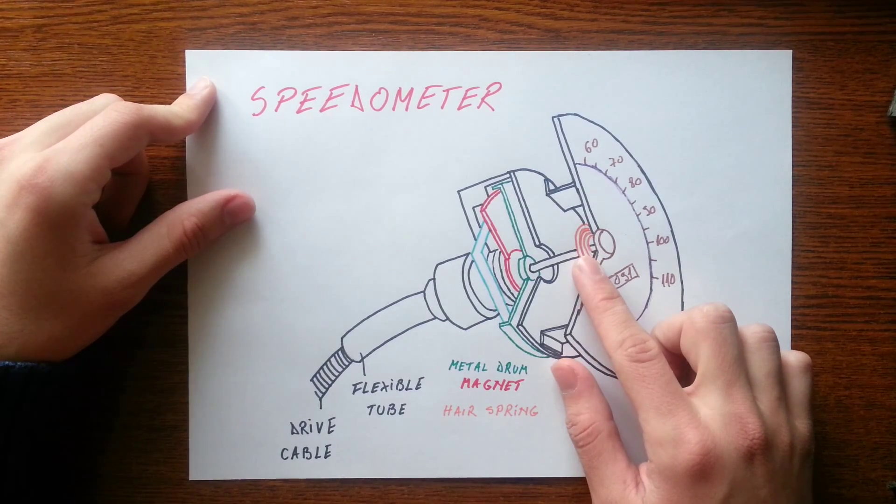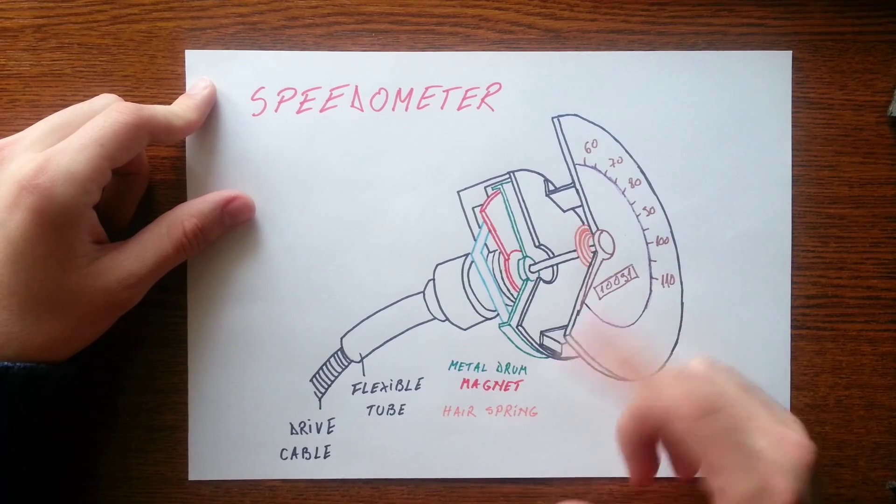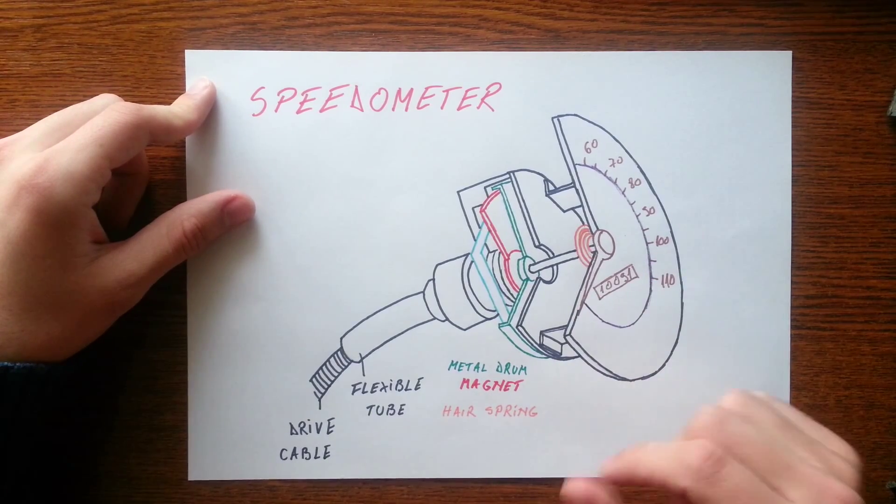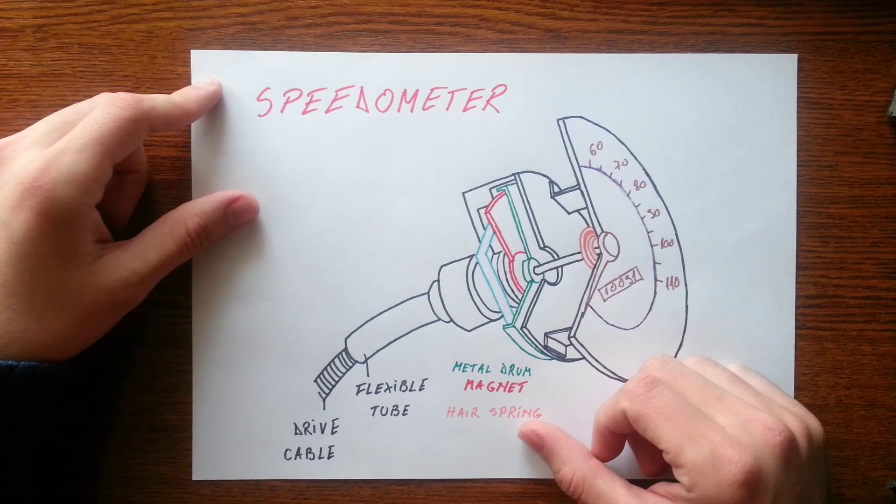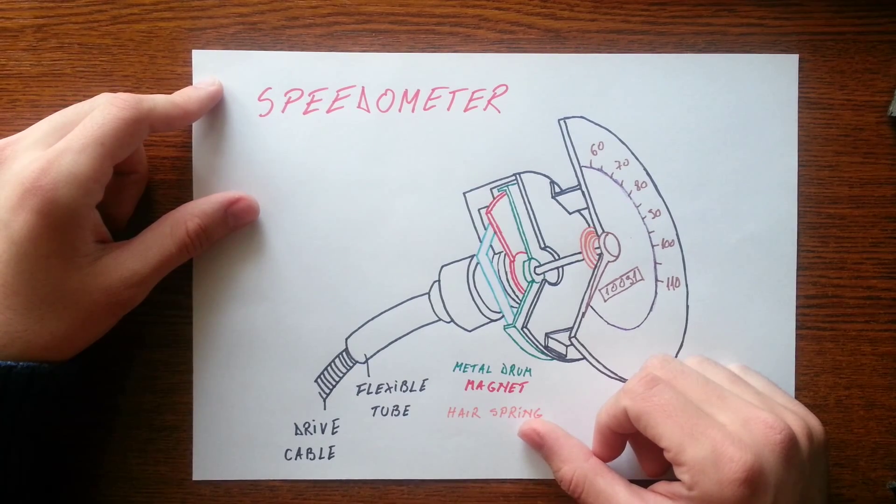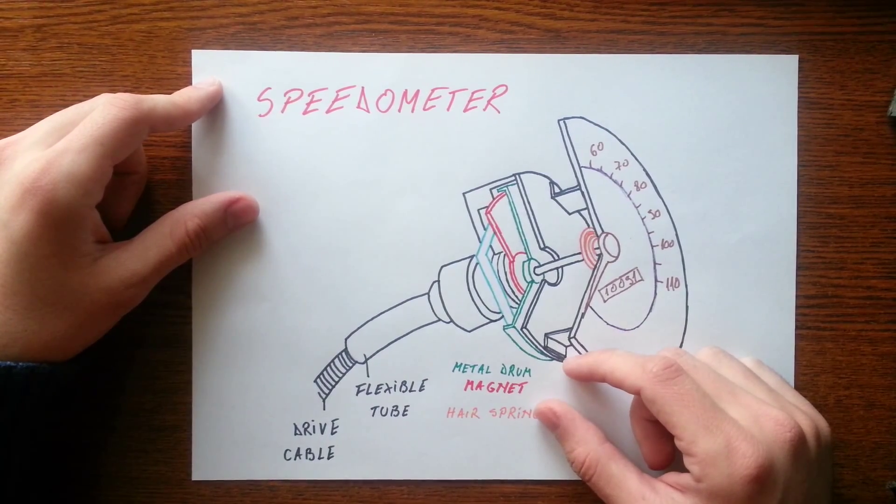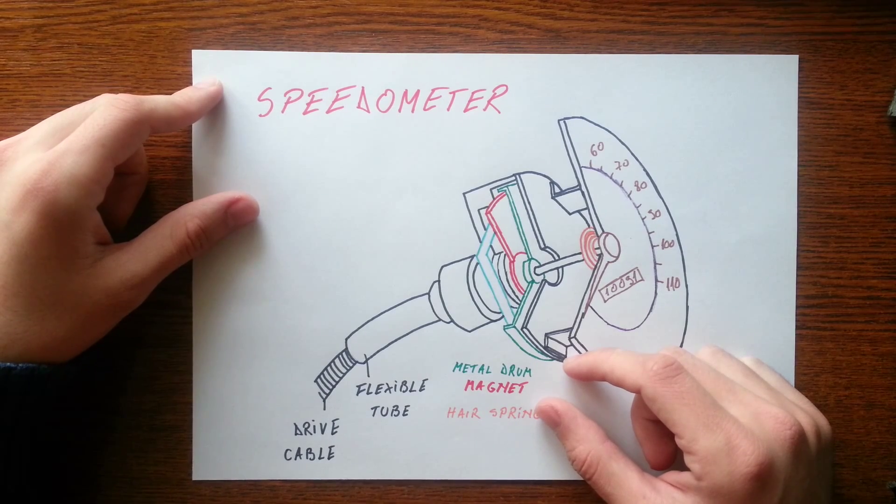The drum is attracted by the magnet, so as the magnet turns, the drum turns too. The faster the car is traveling, the greater the pull of the magnet on the metal drum, and the further the needle moves on the dial. The needle moves until the restraining force of the spring brings it to rest.